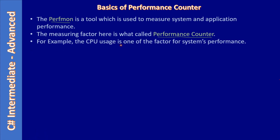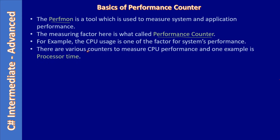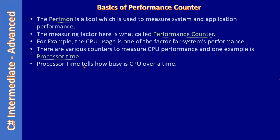CPU usage is one factor for system performance and can be measured using a performance counter. There are various other counters to measure CPU performance — one example is processor time. CPU performance can be tracked using different kinds of performance counters. In the tool we can see how these counters are grouped under processor. There is also a different set of counters grouped under process, where you are tracking the performance of your specific process. There will be various parameters, and inside each parameter there will be various counters grouped. Processor time tells you how busy the CPU is over time.